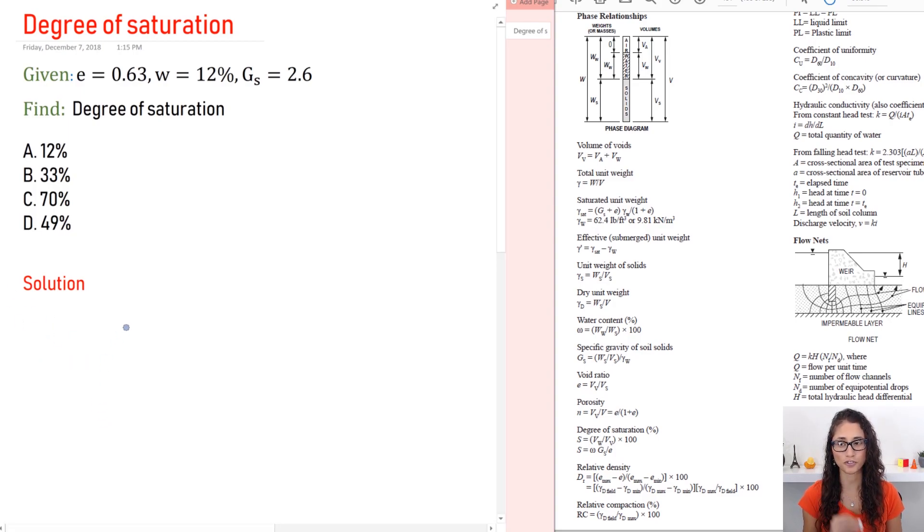Okay, so the first thing we're going to do is write the equation for degree of saturation just like how we did the previous problems. So note here that we have two equations. The first one we're not going to use because we don't have the volume of the water, we don't have the volume of the void.